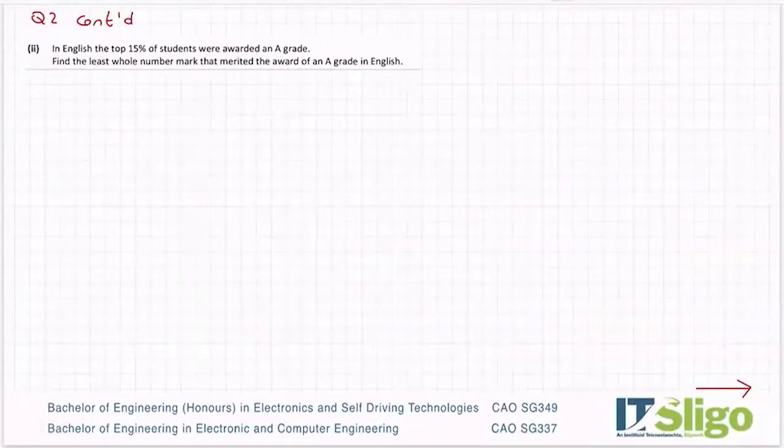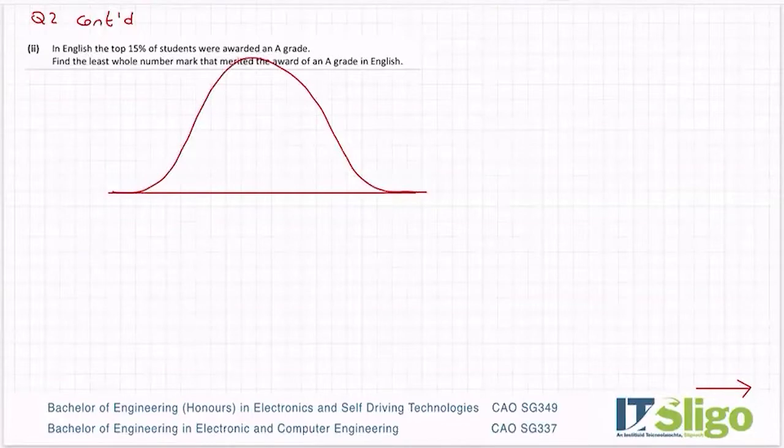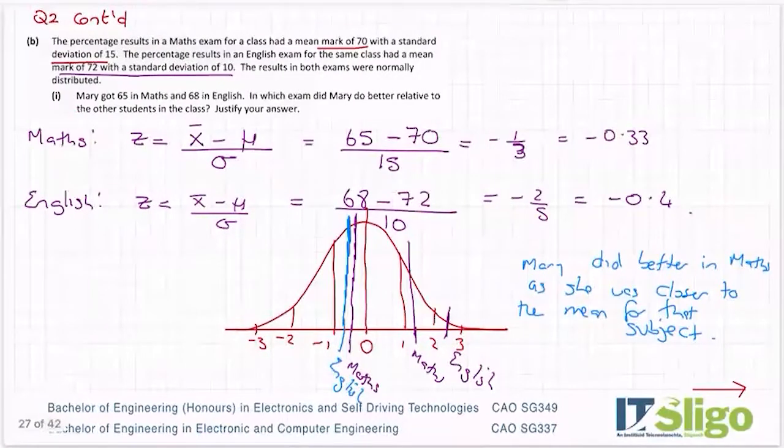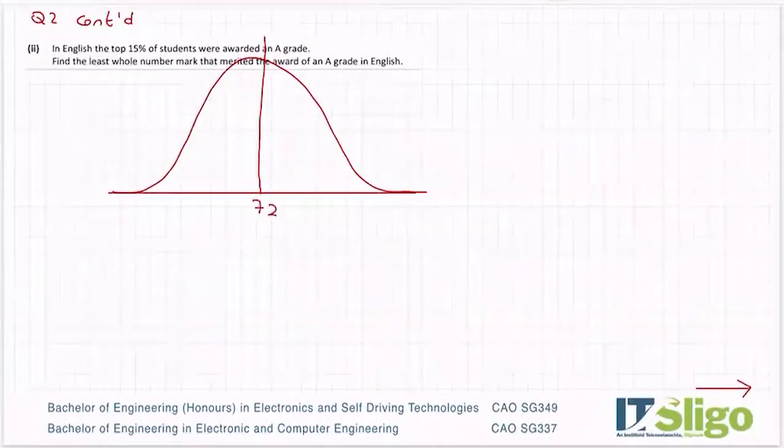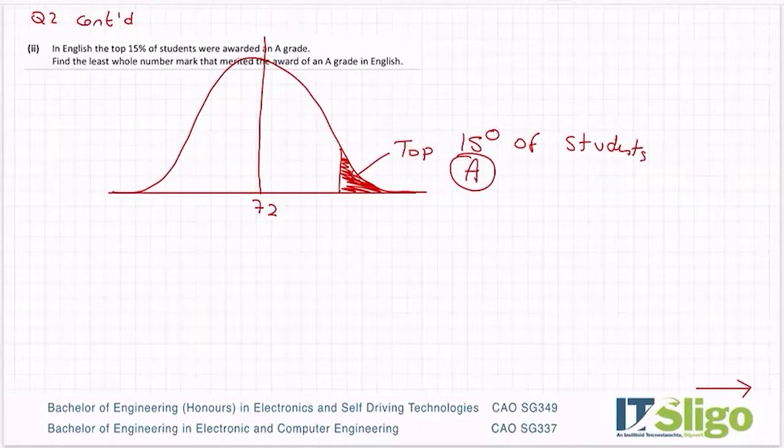In English, the top 15 percent of students was awarded an A grade. Find the least whole number that merited the award of an A grade in English. So now we're up with the top half of the class. Let me go back for the mean of English was 72 and they're saying the top 15 percent of students. So this will be the top 15 percent in the class. So these were the A students.